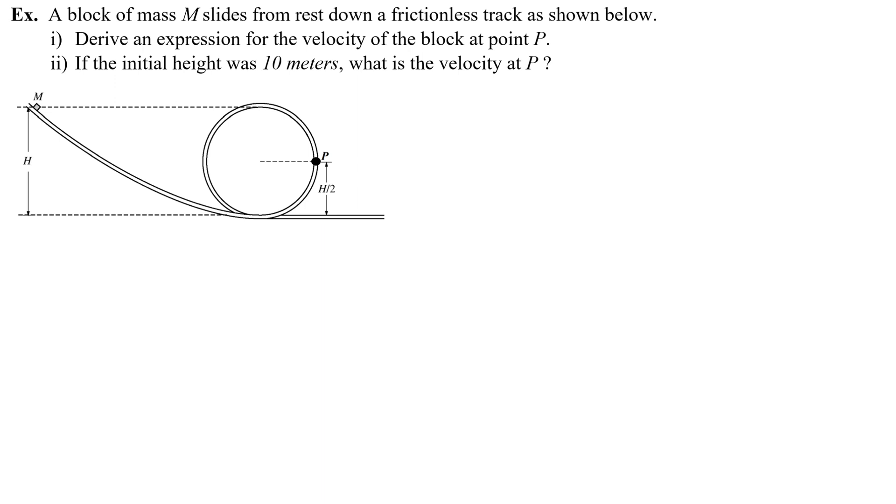A block of mass M slides from rest on a frictionless track as shown below. Derive an expression for the velocity of the block at point P. Basically I'm going to do E₀ = E, and in the beginning I start from rest, so in the beginning you have all potential energy. It says it starts from rest, so no kinetic energy, UG.